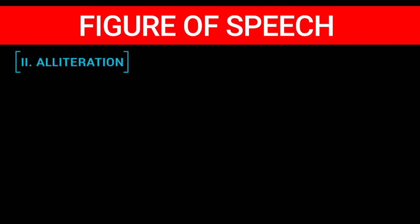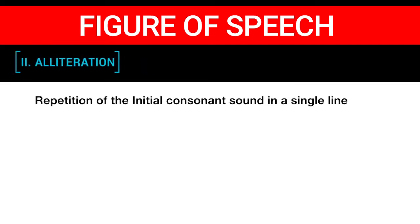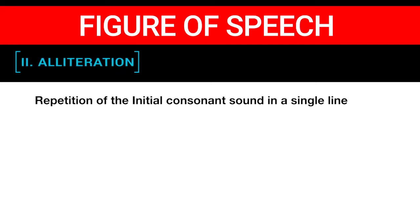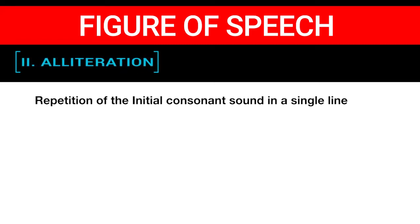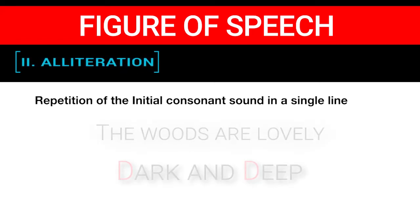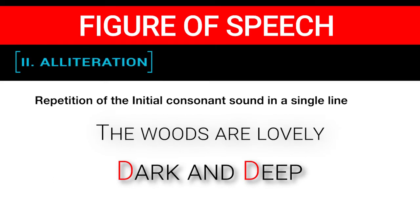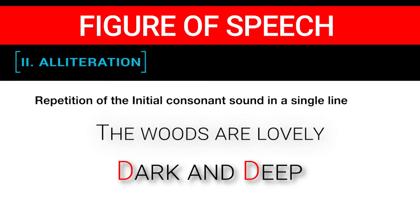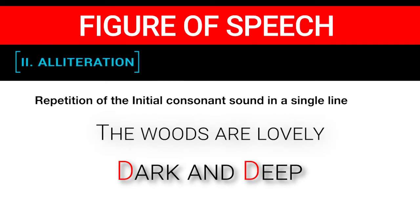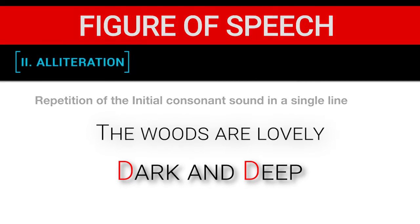Secondly, alliteration. It is the repetition of the initial consonant sounds in a single line. For example, the line 'The woods are lovely, dark and deep.' Here the consonant D is repeated.